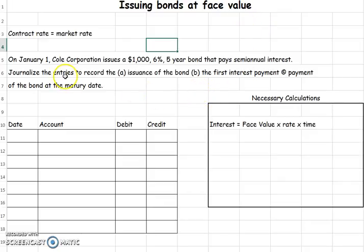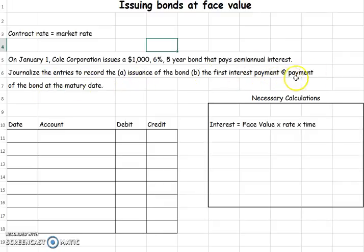Here's the example. On January 1, Coal Corporation issues a $1,000, 6%, five-year bond that pays semiannual interest. Semiannual interest means that we're going to pay interest every six months. We need to journalize the entries to record the issuance of the bond, the first interest payment, and the payment of the bond at the maturity date — five years out.